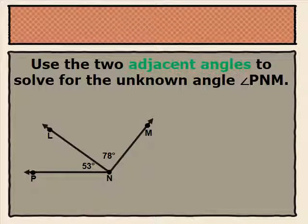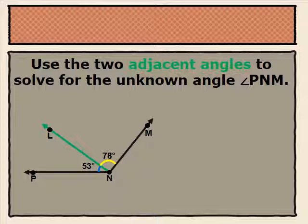Use the two adjacent angles to solve for the unknown angle, angle ENM. Looking at the information given to us, we see that angle LNM is 78 degrees and that angle ENL is 53 degrees. Because our angles both share the ray NL, we're able to say that both of our angles are adjacent — that they are next to one another.